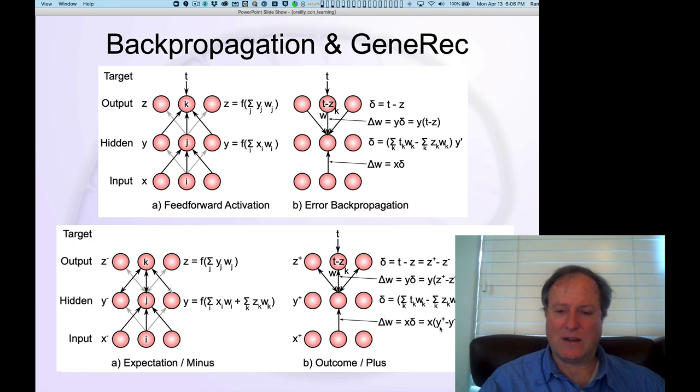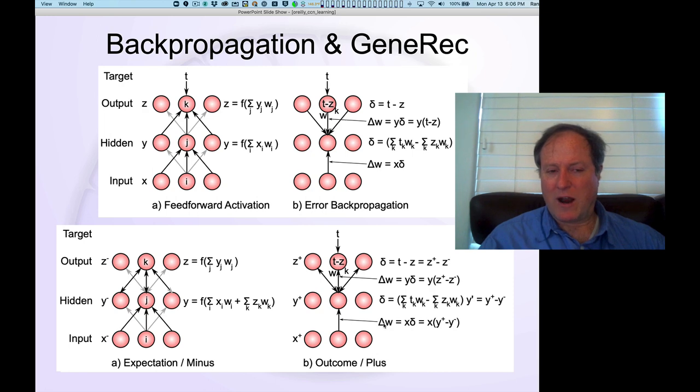And so mathematically in error backpropagation you change the weight as a function of this kind of delta function here, but in GeneRec, which is the biologically plausible version of backpropagation that we're using, we change the synapses down here and these earlier deeper synapses in the network directly as the sending activity times the plus phase activity of the receiving unit minus the minus phase activity.